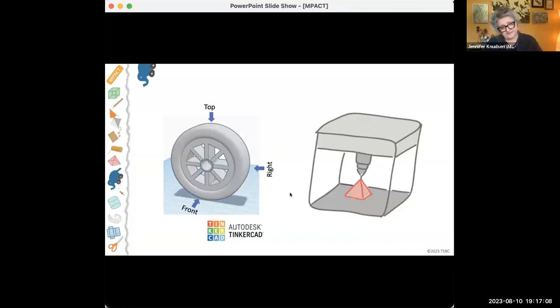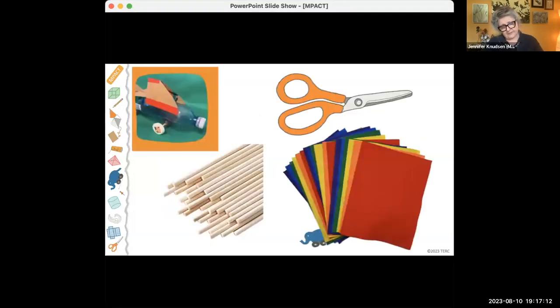But we don't just leave kids in the realm of 3D printing. We also have them use traditional craft materials to create the rest of their toy. And here you can see in the upper right, toy and wheels that was made of cardboard and a soda bottle.